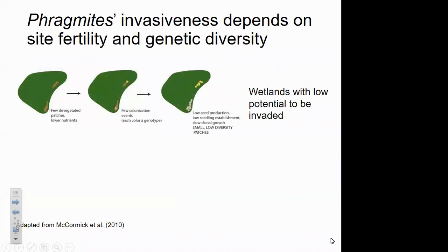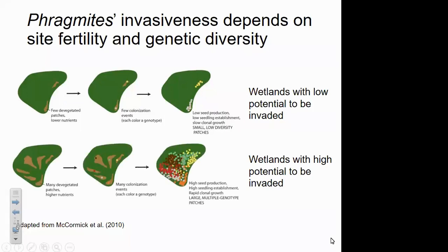The invasiveness of Phragmites depends on environmental conditions, site fertility, disturbance, and genetic diversity. In a lower-nutrient, less-disturbed system, there's less accumulation of genetic diversity and seed production stays relatively low. In contrast, in a more disturbed, higher-nutrient system there are more openings for European Phragmites to colonize, leading to greater accumulation of genetic diversity and more viable seed — setting up a positive feedback where greater opportunities lead to greater genetic diversity, which leads to greater spread potential.